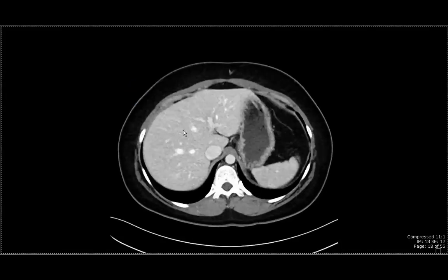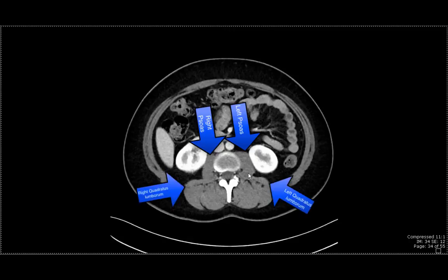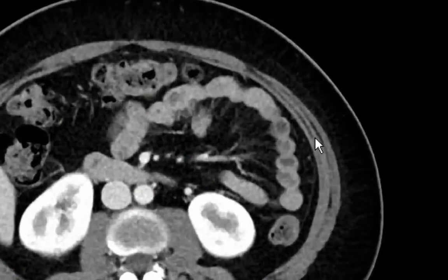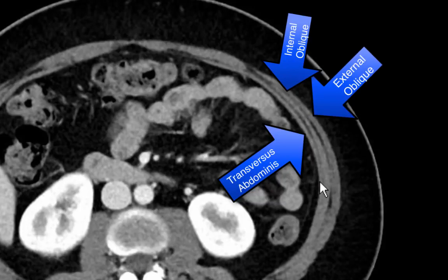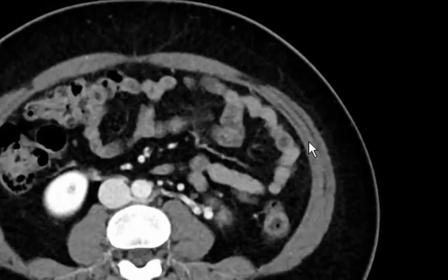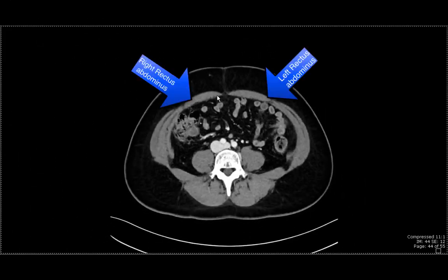I'll also showcase some muscles so everyone's aware where they are. Over here is the psoas muscle on the right side and on the left side. Just posterior to it, lying almost horizontally, is the quadratus lumborum muscle. On this image, you can see the three muscles of the anterior abdominal wall: the outermost muscle is the external oblique muscle, the next one is the internal oblique muscle, and the last one is the transversus abdominis muscle. In the midline, you can see the rectus abdominis muscle meeting centrally at a portion called the linea alba.